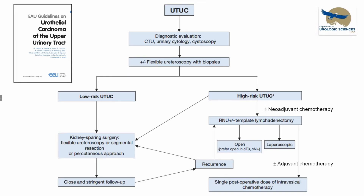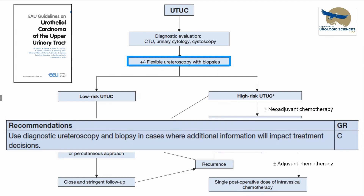If we look at the European guidelines as an example, every patient is supposed to be evaluated with a CT, urine cytology, and cystoscopy — I don't think any of us would disagree with that. But then there's this plus-minus flexible ureteroscopy with biopsy in the algorithm that doesn't really tell us how to use it. In the text, the recommendation is to use diagnostic ureteroscopy and biopsy in cases where additional information will impact treatment decisions. I think this is the key: in which patients will biopsy change management?